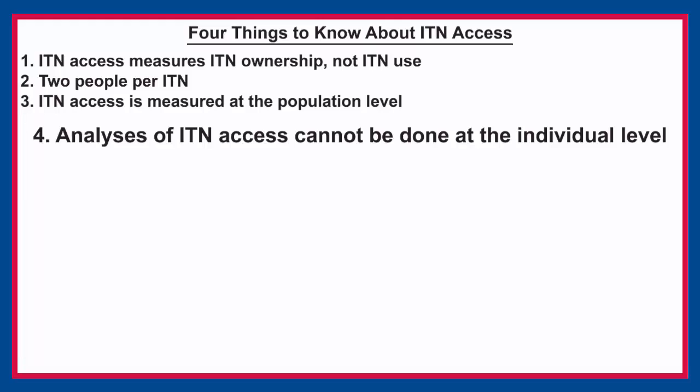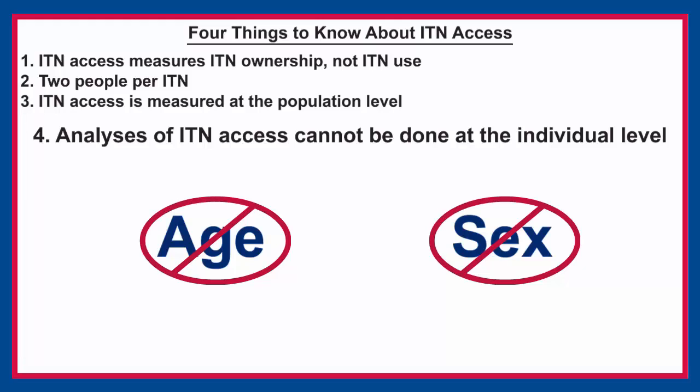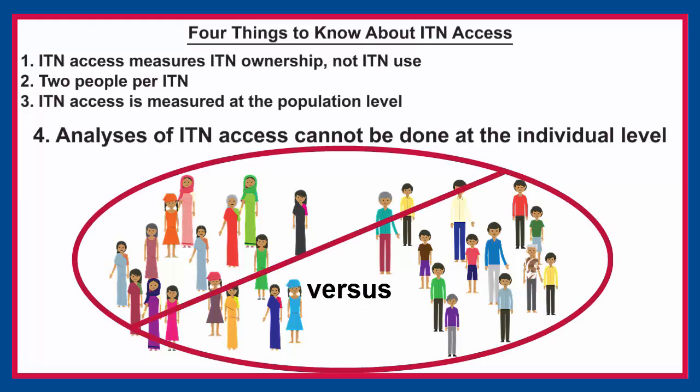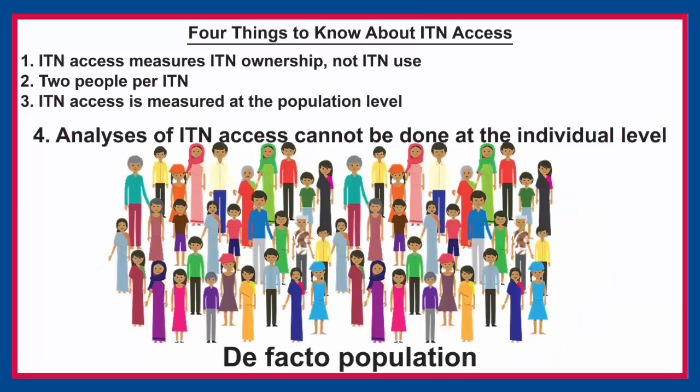Individual attributes such as age or sex cannot be assigned to those with ITN access or to those without. For example, you cannot say that ITN access is higher among women than men, because ITN access looks at the population as a whole, rather than individuals.